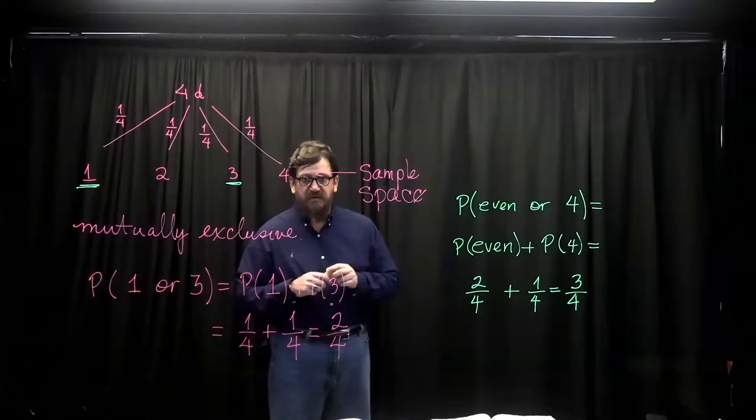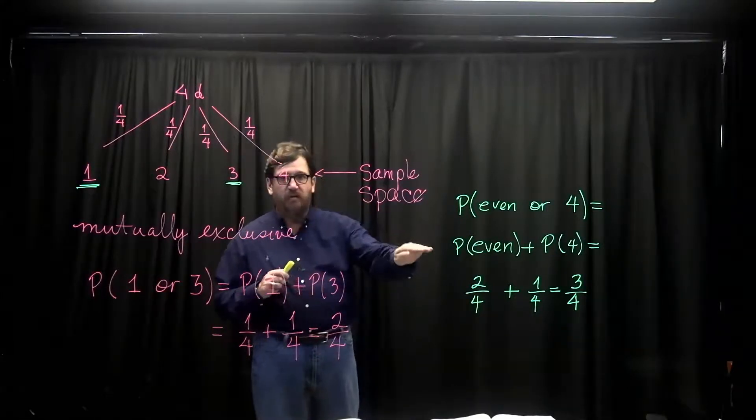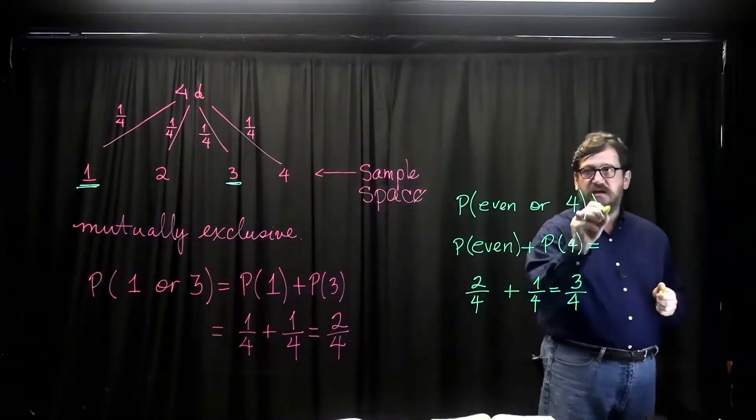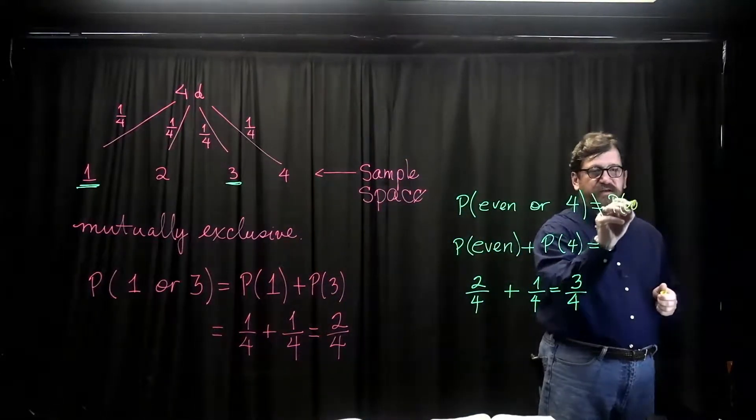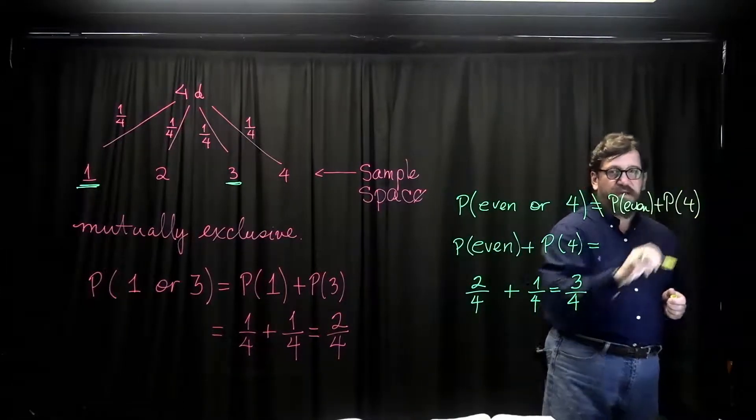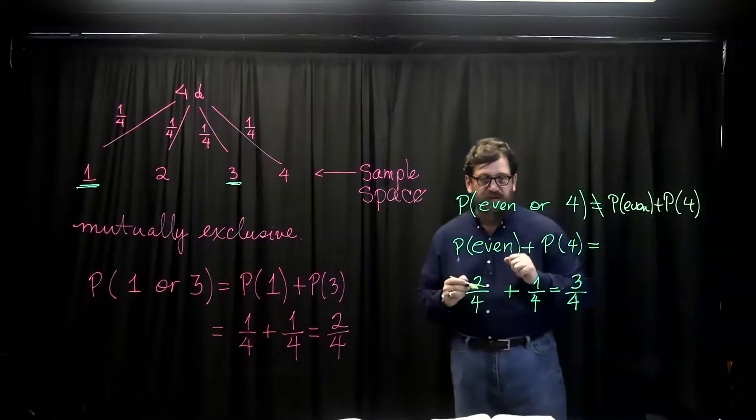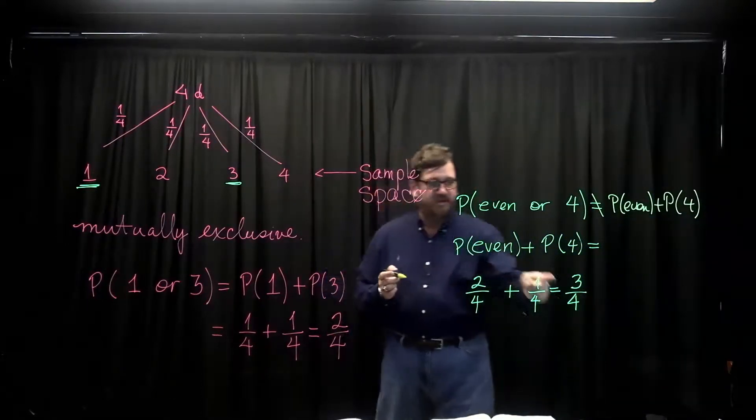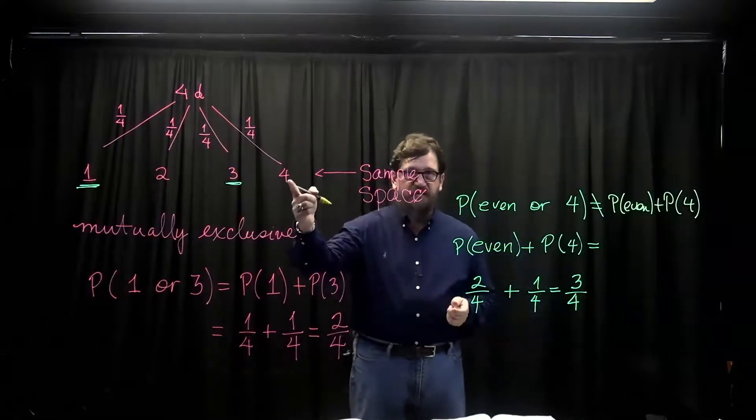I'm going to continue this video and talk about now what do we have to do. This is simply not equal to the probability of even plus the probability of four. It's not that simple. Something else must be going on.